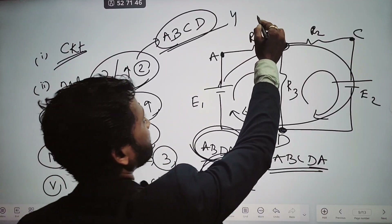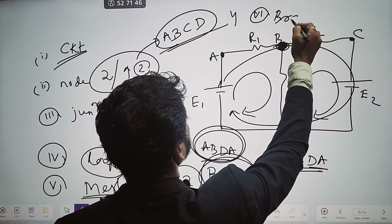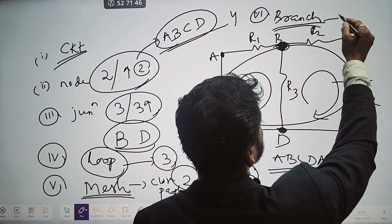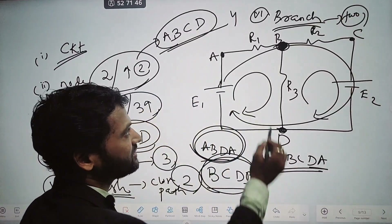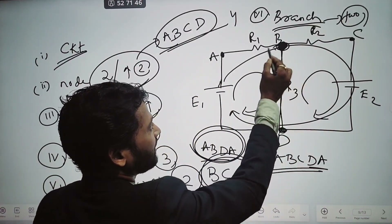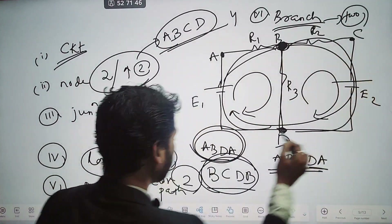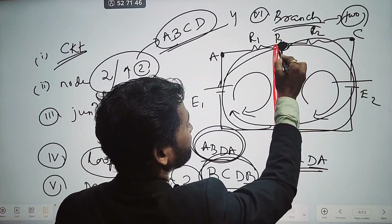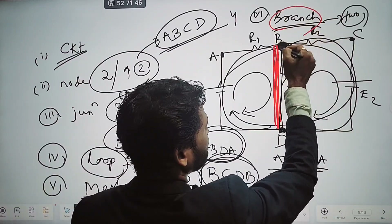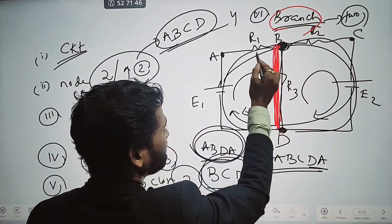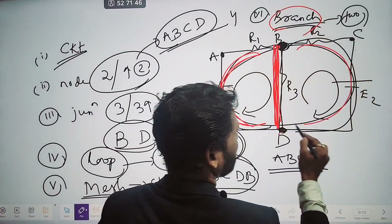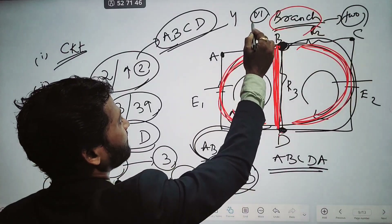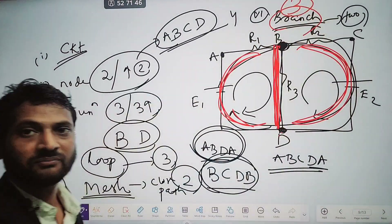The last point is branch. A branch is a path between two junctions. The junctions here are B and D. Between B and D there are three paths — so there are three branches. Branch is a path between two junctions, and in this circuit there are three branches.